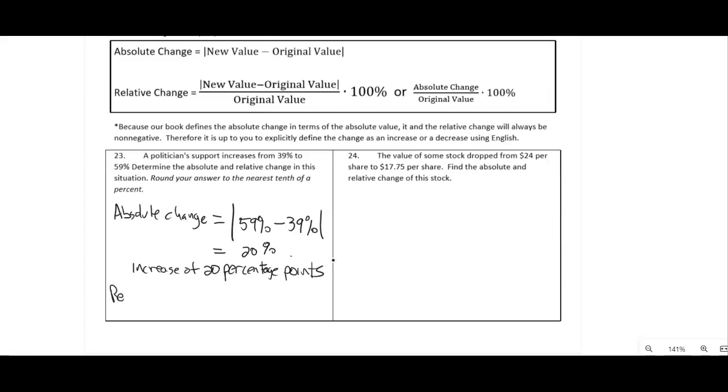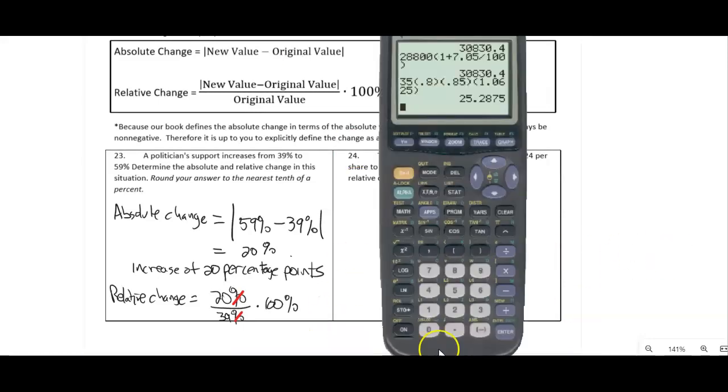Okay, the relative change can be worked on with the formula, but we can also use the absolute change over the original value times 100. And since we have the absolute change, we can just go with 20% over the original value, which was 39%. So, the percentage points, those units reduce, but we still get a percent for this problem. And our calculator gives us 20 divided by 39, and then multiply by 100.